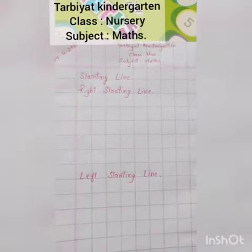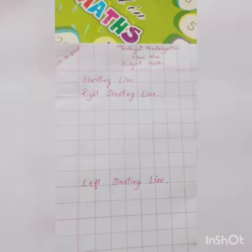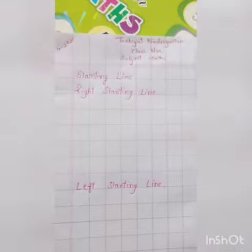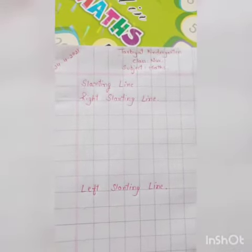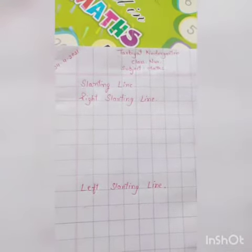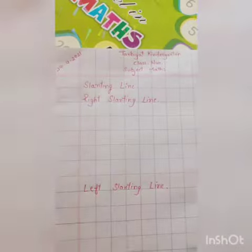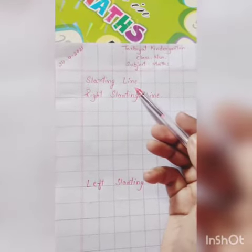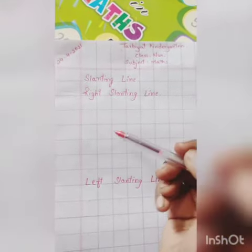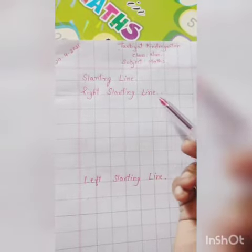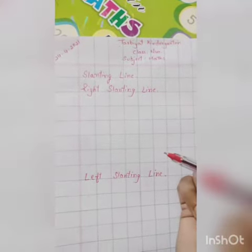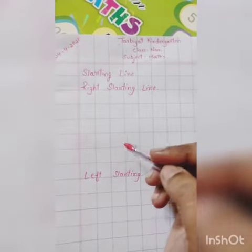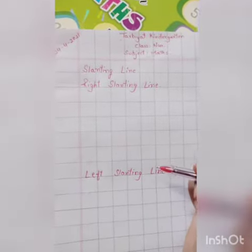Good morning, welcome to university class. Today is your math class and we are going to learn how to write slanting lines. There are two types of slanting lines: right slanting lines and left slanting lines. While writing, do not pick up your pencil — you have to write it in one stroke. Now let's start.